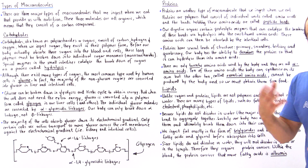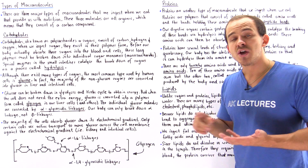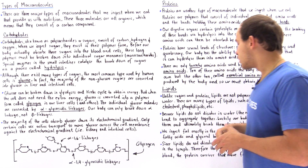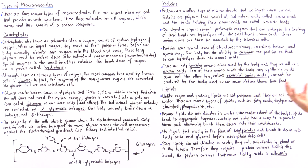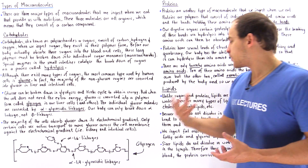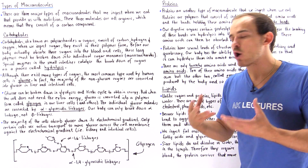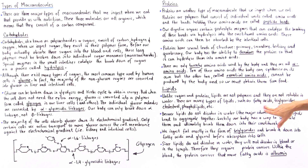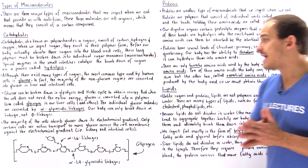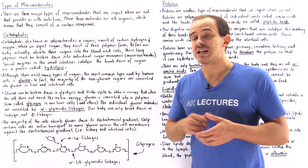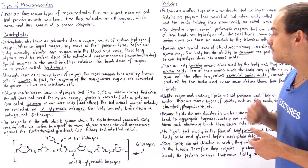Each type of lipid serves its own unique purpose. For example, phospholipids and cholesterol are found in our cell membranes, while fatty acids and triglycerides are the form in which we store fats inside our adipose cells. Fatty acids are also the lipids we break down to form ATP.